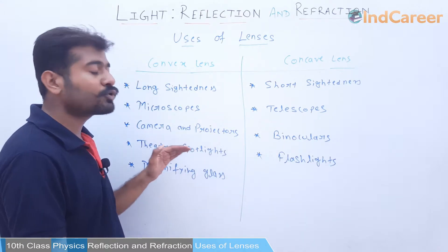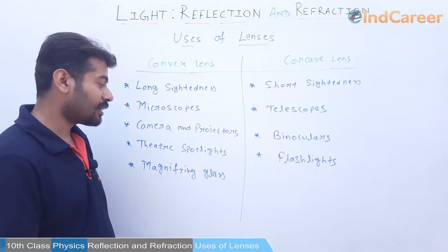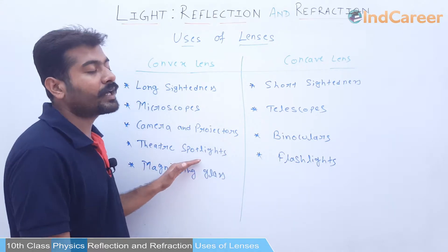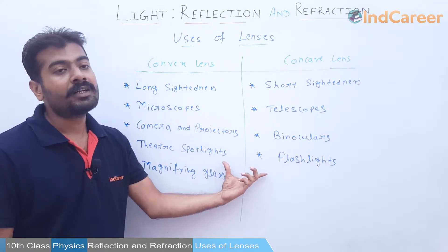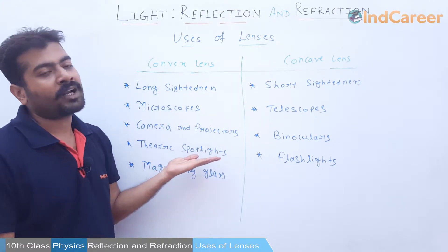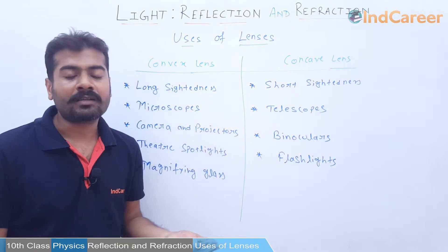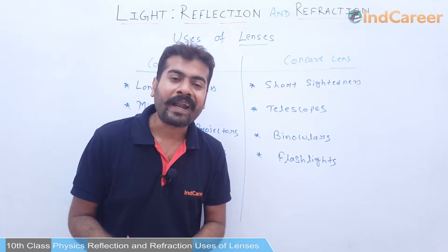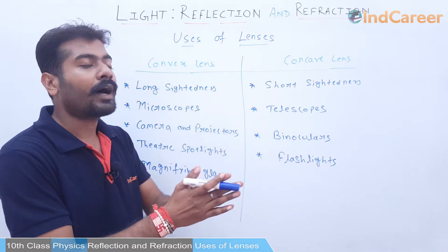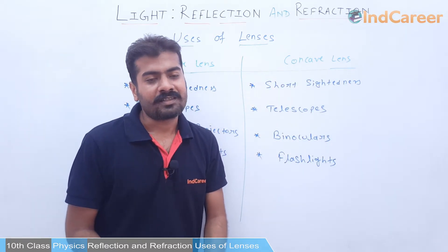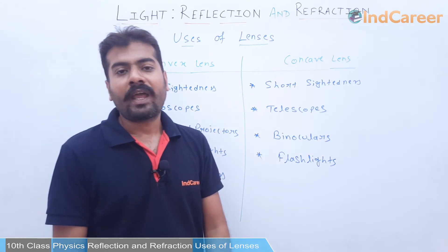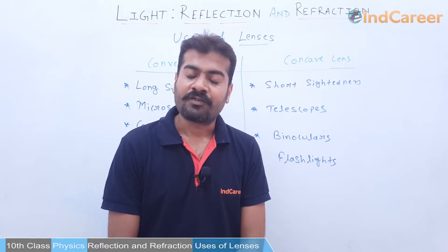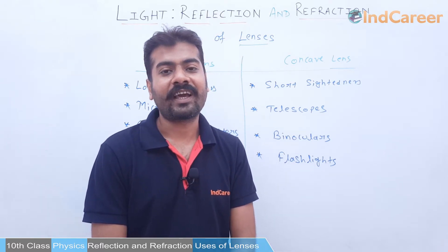Theater spotlight — very important, यह paper में बहुत पूछता है — why convex or converging lenses are used in theater spotlights, and why flashlights consist of concave lenses only. The reason is the converging nature of convex lens focuses light on a particular spot, whereas concave lens diverges light for wide coverage. In the next video we will learn about the power of a lens, linear magnification, and the lens formula. Thank you for watching IndCareer videos.